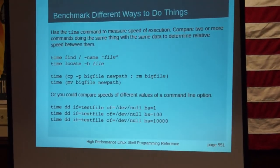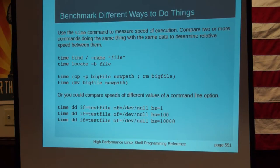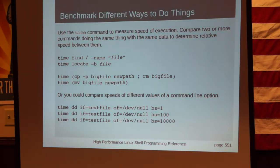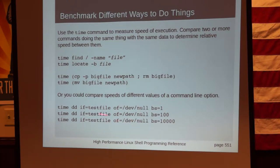Here we get to benchmarking. A lot of times it's not obvious what command or approach is going to be faster. So what you can do is set up some sample data or a sample situation and time them. The time command will give you an output of how much real time, how much CPU time, and so forth. Run that a few times, average the results, and you can get a real good idea of how one alternative compares to another. You can compare different commands or different block sizes. I actually did this on the DD command to find out how big a difference the speed was just based on the value of that block size option.